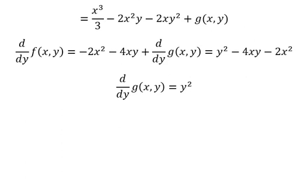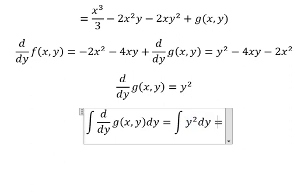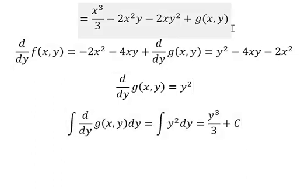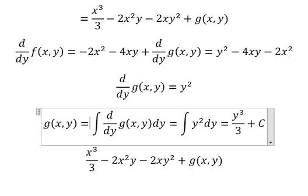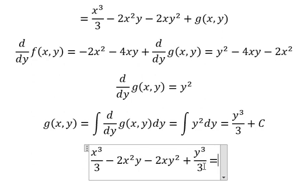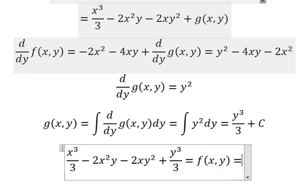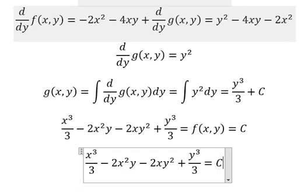Then we put the integration for both sides. This one we have y to the power of 3 over 3, and I will put about C. So we need to go back here — the integration of this one that is about g(y). And we know that this one equals to f(x,y). So f(x,y) equals to C, and we can simplify like this.